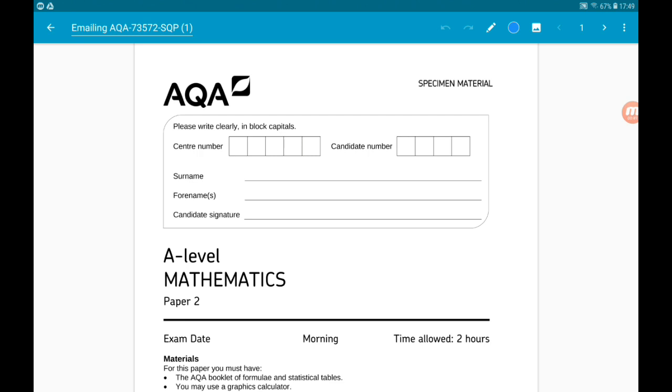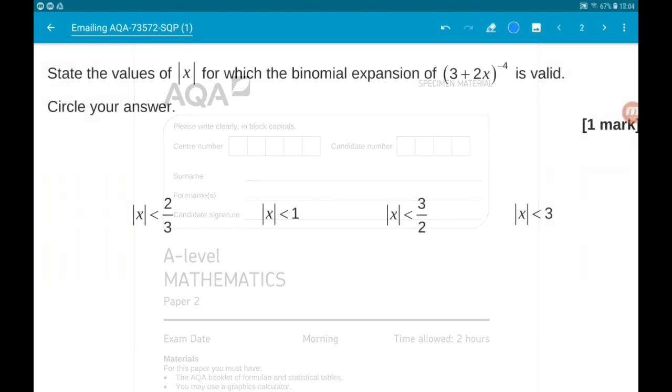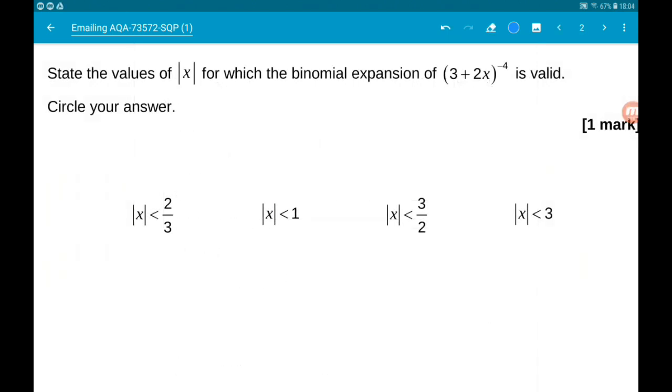Question 1. Validity of a binomial expansion. So we want to state the values of mod x for which the binomial expansion of 3 plus 2x to the minus 4 is valid. Circle your answer.